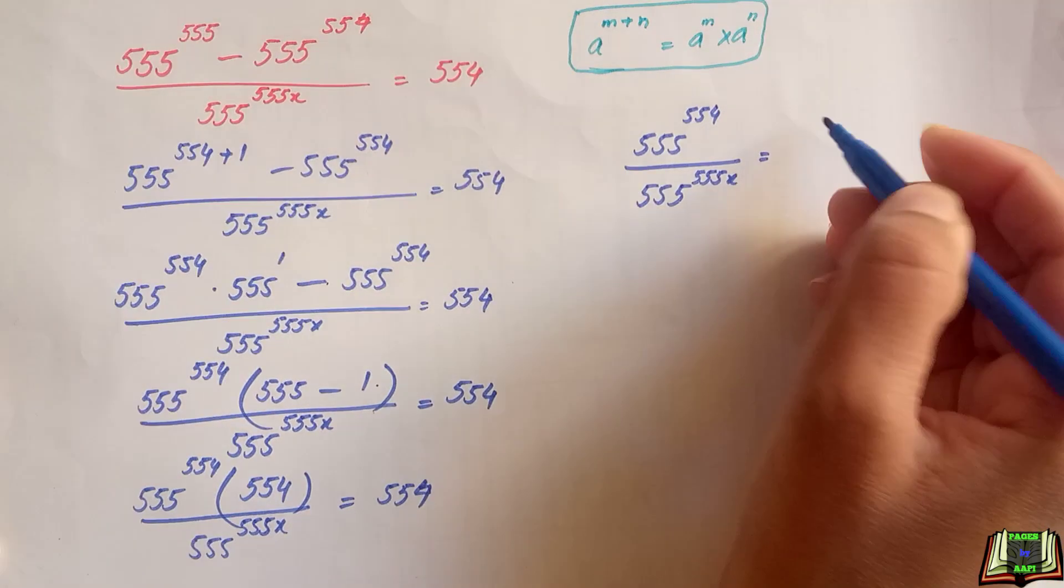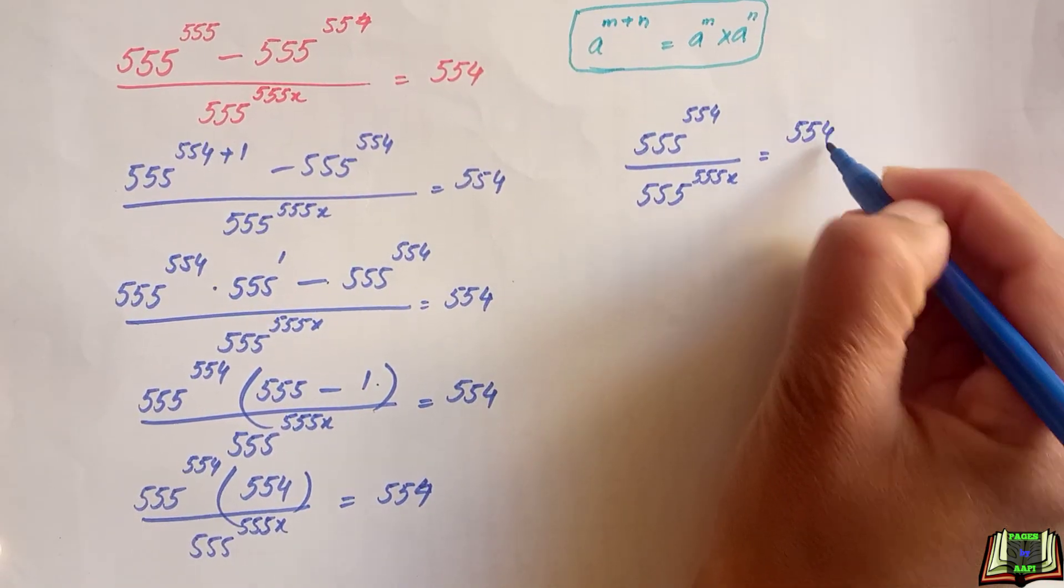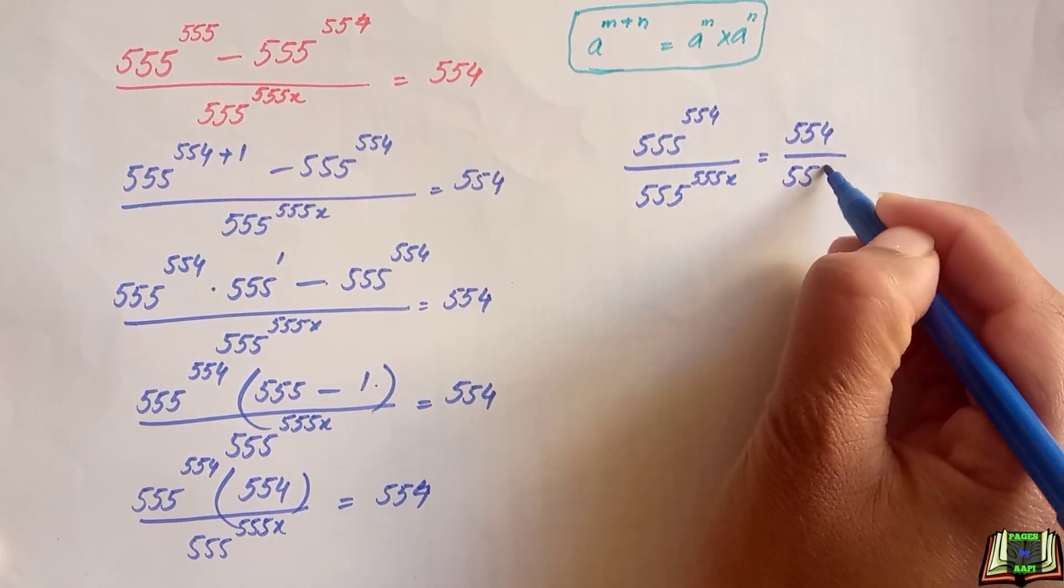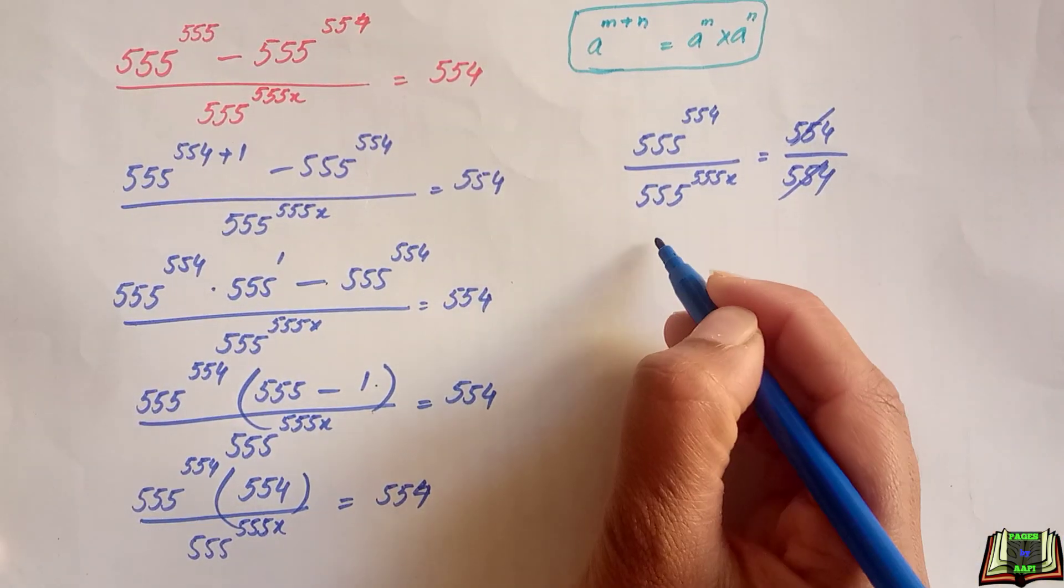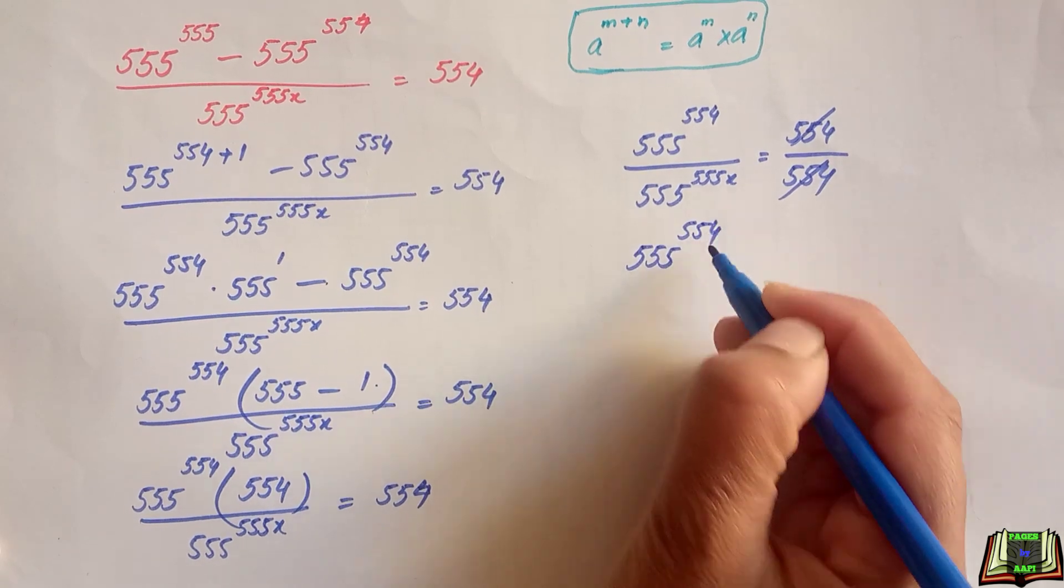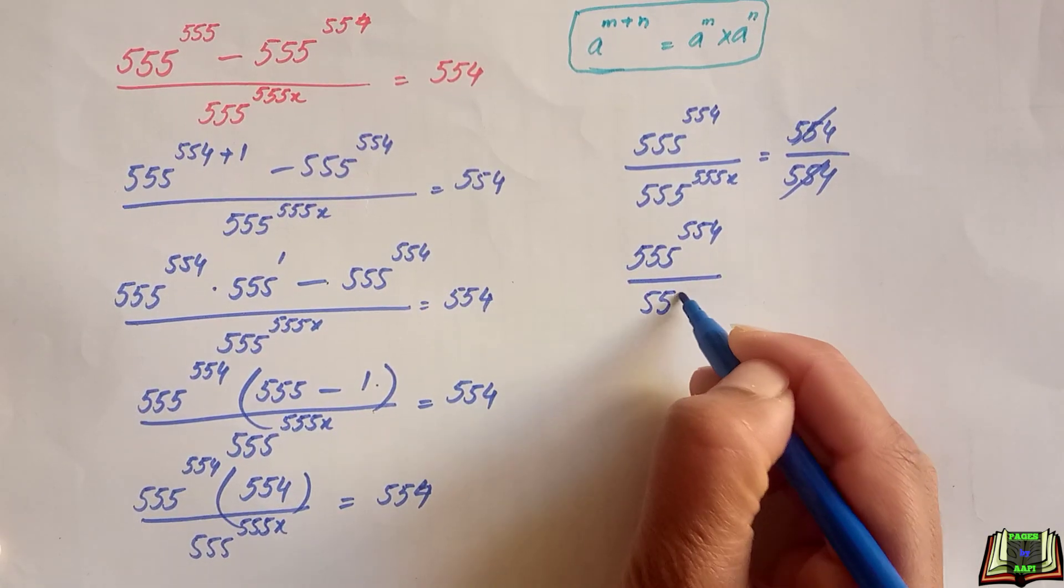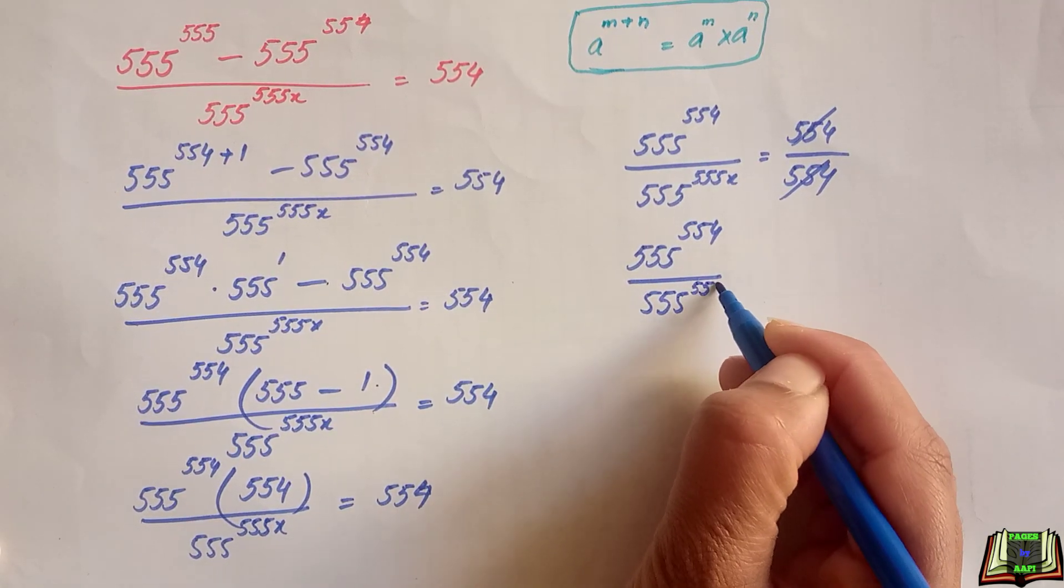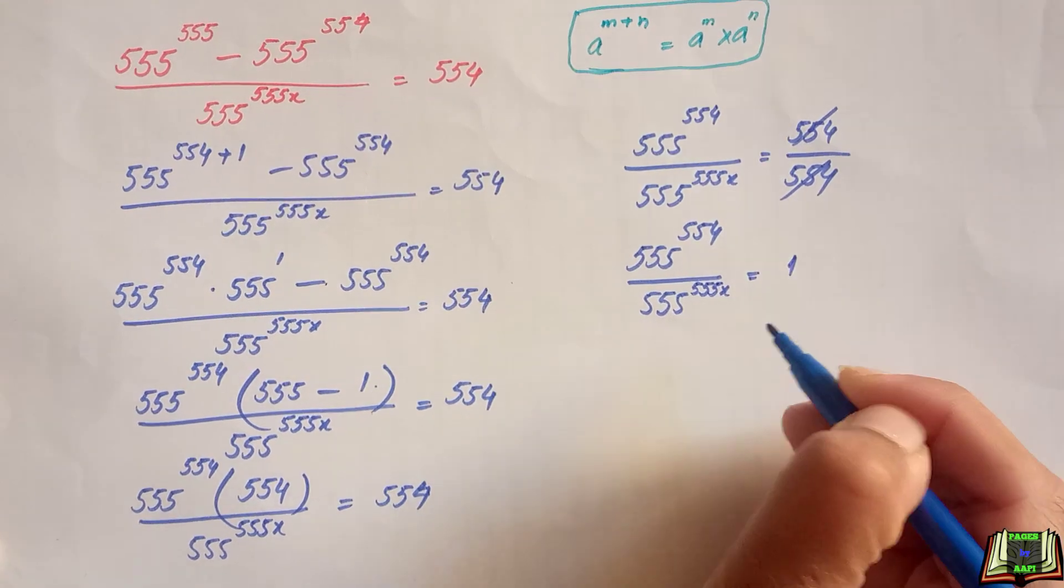Here we are going to divide this 554 to the right hand side. We get 555 raised to power 554 divided by 555 raised to power 555x and here we got 1.